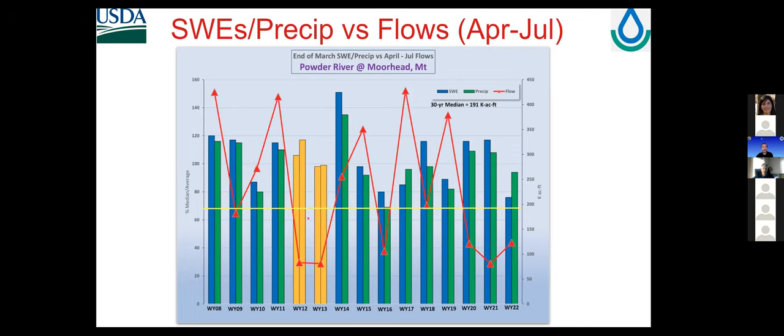The Powder River at the Montana state line uses the same color scheme. The Powder and Tongue are highly dependent on April and May precipitation — that's why you see spikes in 2017 and 2019. Our current drought is pretty close to what we saw in 2012 and 2013 as far as April through July flows. We're a little optimistic. This was the April 1st forecast — we'll have another forecast next week for May 1st and hopefully this number will increase.